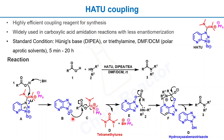This anion again adds to the ester functional group, and that generates tetramethylurea and PF6 as byproducts from this reaction. In the next step, the amine in the reaction adds to the ester of this intermediate, forming the final amide product, along with another byproduct — hydroxy azabenzotriazole.